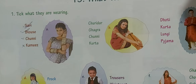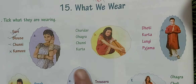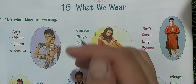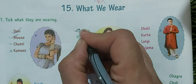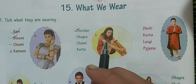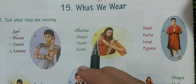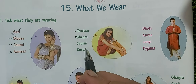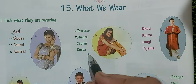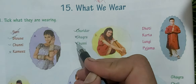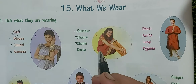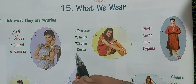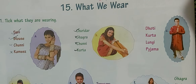Next — churidar. She is wearing churidar on the legs — tick. Ghaagra — no, ghaagra is lehenga — cross. Chunni — no, chunni is not visible here — cross. Kurta — yes, this is kurta — tick. And this is churidar. So we will put a tick on kurta.